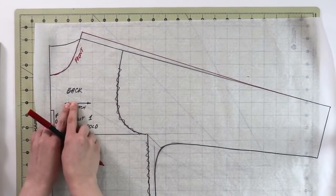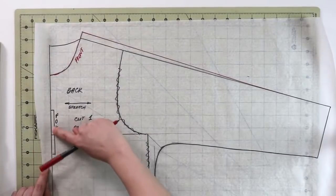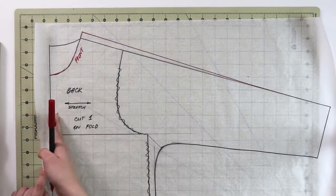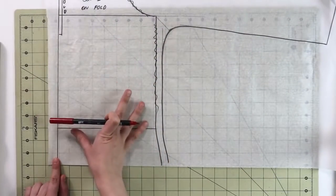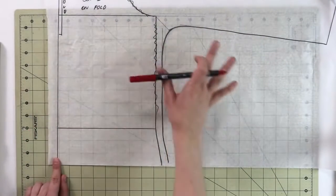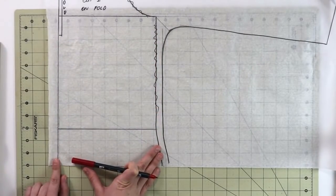As always, the stretch direction is going to go horizontally. Now you're going to cut one on fold. Here's the fold line at the center front and center back. And of course, if you want to extend your top to be a tunic or a dress or some sort of other design, then of course, you're going to extend the length of your top.